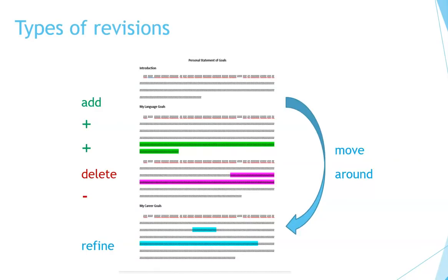Here are the types of revisions I mentioned, shown in different colors so you can see what you might do with a draft to make it better. Let's say your first draft looks like this and you want to add something to it — I put the things we added in green. Maybe we want to add a sentence to the bottom of the second paragraph.